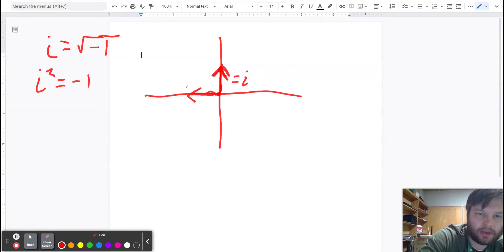So i squared is equal to negative one. So just as a reminder, this is our real number line. So it's just regular old negative one. One step to the left is zero. This is our imaginary number line up here.